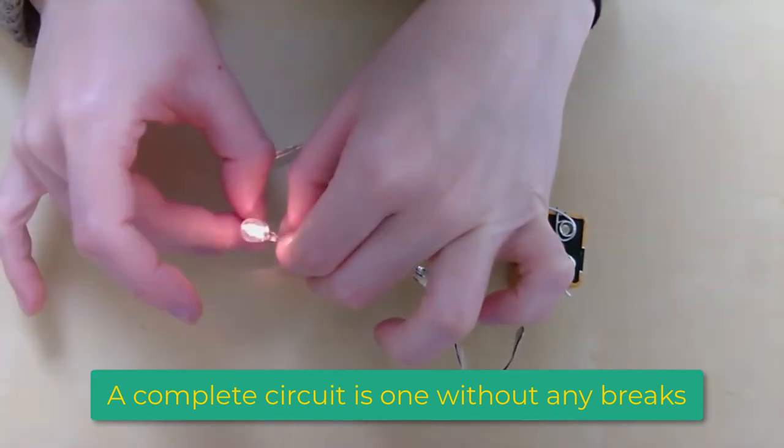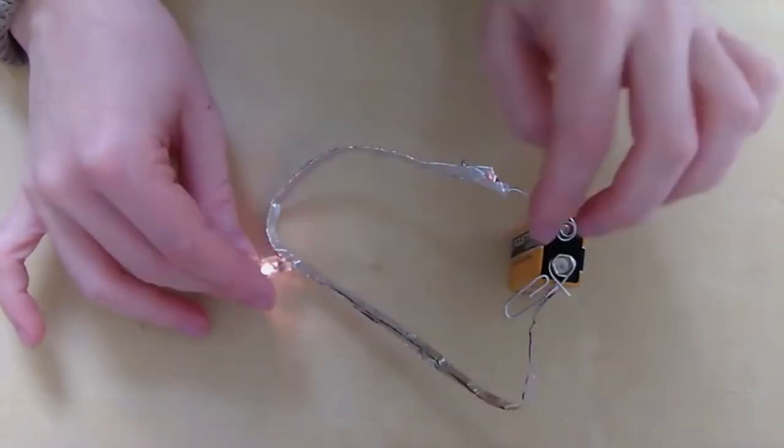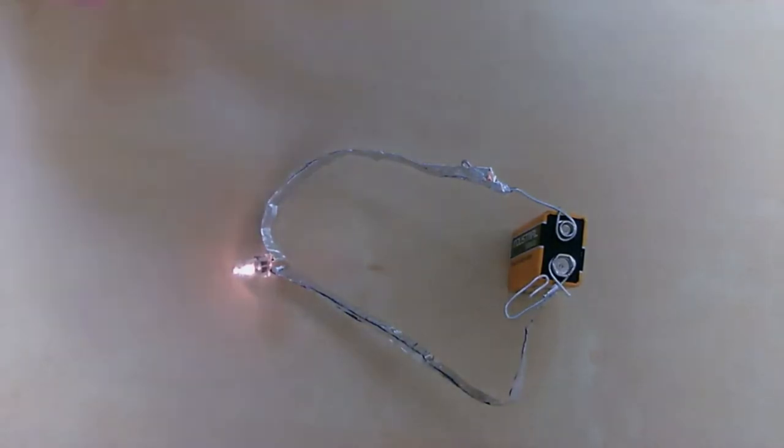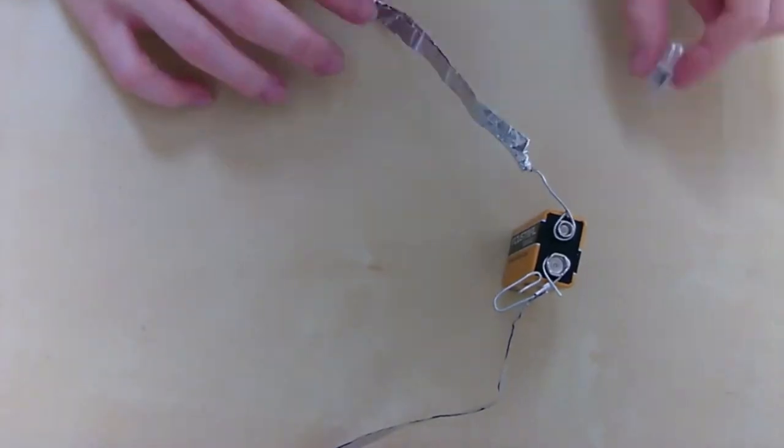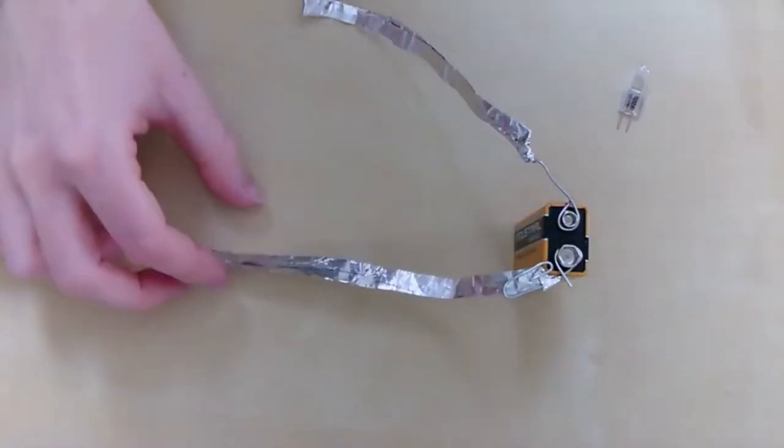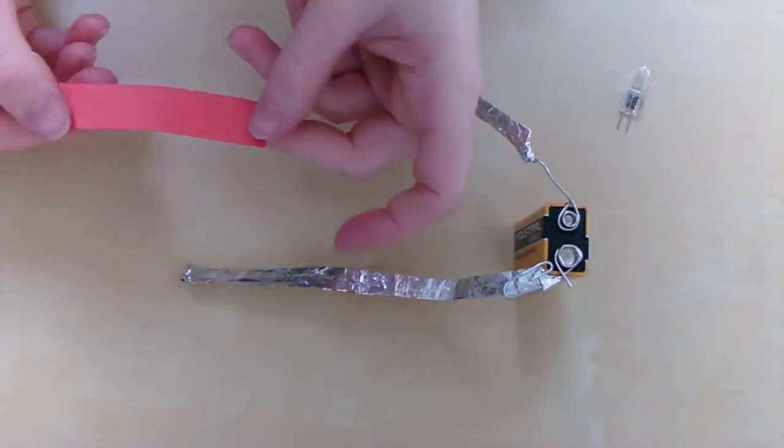And there you go. Ours is working. Hopefully, yours is too. But we're not finished yet. The next step is to attach a switch so we can turn our light bulb on and off as we wish. And to do this, we need two more paperclips. These can be plastic coated, but that's fine. And a piece of paper or card.